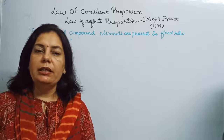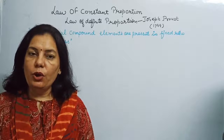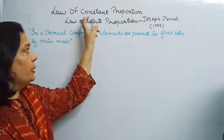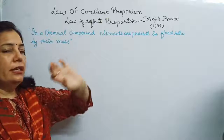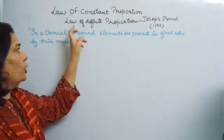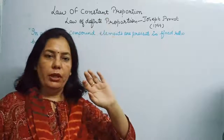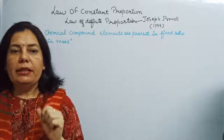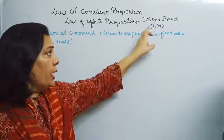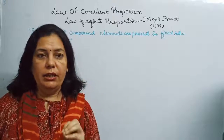Today we will learn the second law of chemical combination, that is the law of constant proportion. This law is also known as the law of definite proportion. This law was given by scientist Joseph Proust in 1799.